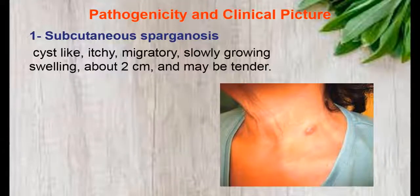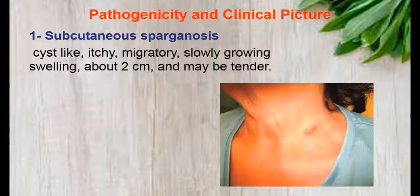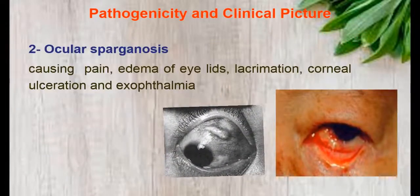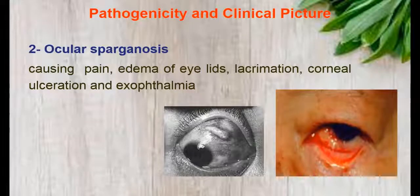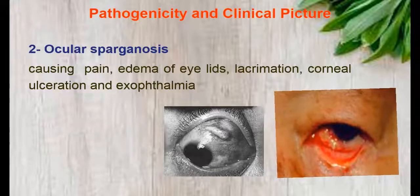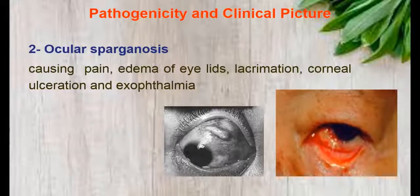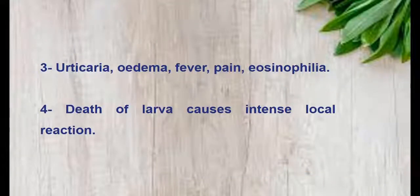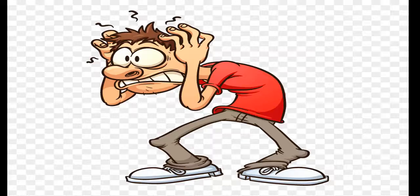Regarding pathogenesis and clinical picture of sparganosis: The first type is subcutaneous sparganosis, presenting as itchy, migratory, and slowly growing cysts, about 2 centimeters in size, which may be tender. The second type is ocular sparganosis, causing pain, edema of eyelids, lacrimation, corneal ulceration, and exophthalmos. Thirdly, urticaria, edema, fever, pain, and eosinophilia may be present. Also, death of larvae causes intense local reaction.